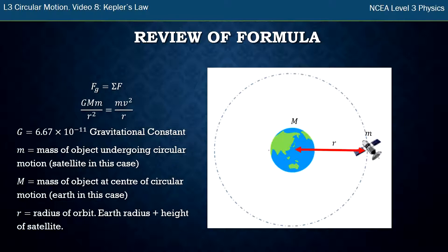Often in an exam question, instead of giving you the radius of the orbit directly, they might give you the earth's radius and the satellite height above sea level, and you've got to add those two together to get the total radius of the orbit.